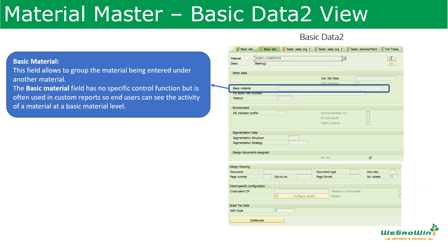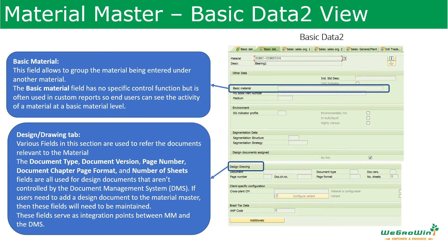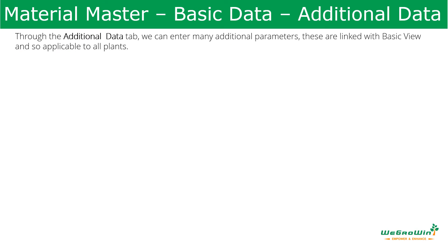Moving to the Basic Data 2 view, there is a field called basic material, which allows grouping the material being entered under another material. It is used for some customization reports and does not have major control functions. The design drawing tab contains fields like document type, document version, and page number. Any material with drawings or specific documents can be attached to the material master through this tab. These fields serve as an integration point between MM and DMS — the Document Management System.